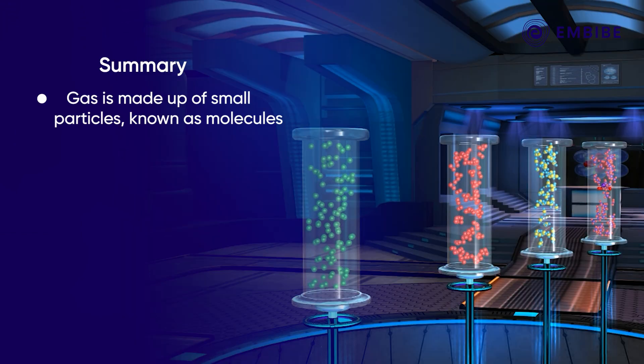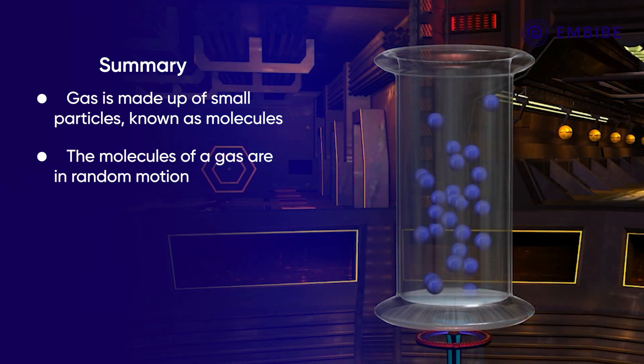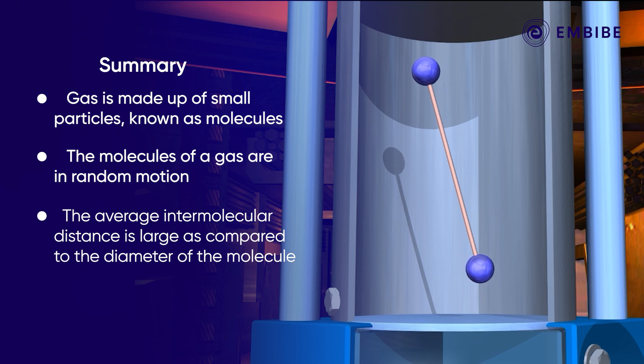To summarize: Gas is made up of small particles. These particles are known as molecules of the gas. The molecules of a gas are in random motion. The average intermolecular distance is considerably large as compared to the diameter of the molecule.